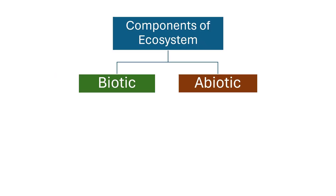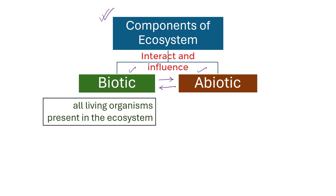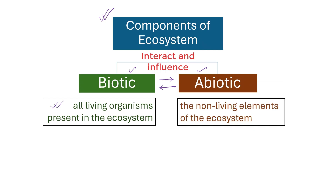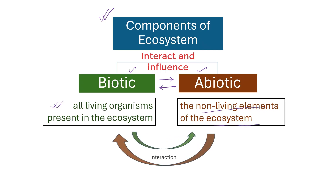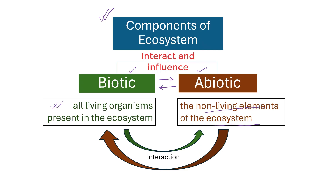Now, let us understand the components of the ecosystem. An ecosystem is composed of two main components: the biotic component and the abiotic component. These components interact and influence each other to create a functioning ecological system. The biotic component comprises all living organisms present in the ecosystem, while the abiotic component refers to the non-living elements of an ecosystem. These factors play a crucial role in shaping the environment and influencing the distribution and abundance of biotic components.